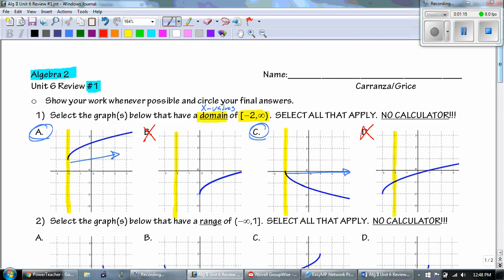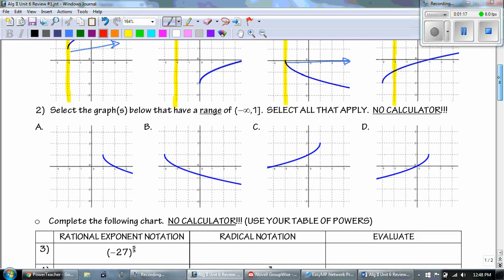Now, for 2, it says select the graph below that have a range of negative infinity to 1. Select all that apply. So, range, those are the y values. My low is negative infinity and then 1 is my high. So the two things that I'm looking at, there's 1 and then is it going down?